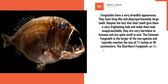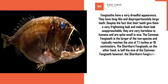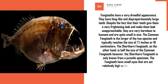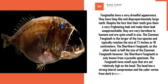The shorthorn fangtooth, on the other hand, is half the size of the common fangtooth; however, the shorthorn fangtooth is only known from a juvenile specimen. The fangtooth have small eyes that are set relatively high on the head. The head has a strong lateral compression and the color varies from dark brown to black. The head is anteriorly deep but slender towards the tail.